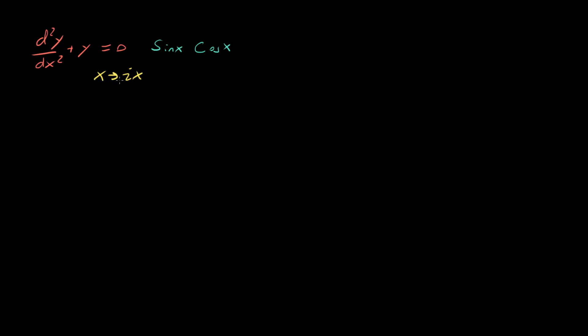And when we do that, what happens is that this original differential equation d²y/dx², this dx² gets an extra minus sign because of the i. And we are left with d²y/dx² - y = 0. This is solved by sinh x and cosh x.